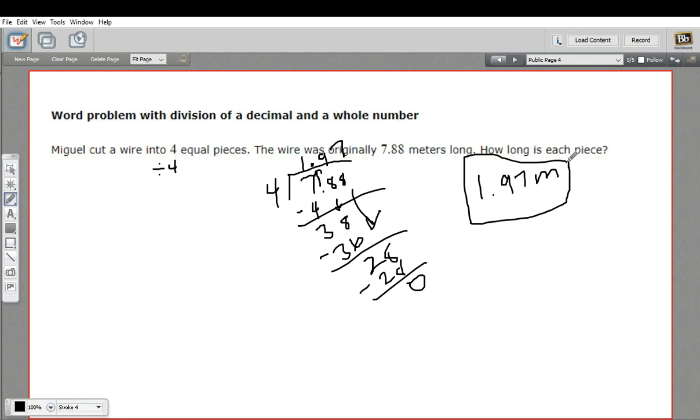And if I look back at the problem, this piece of wire is almost eight meters long. And I cut it into four pieces. So each piece should be almost two meters long. And here we've got 1.97. So that all seems to make sense.